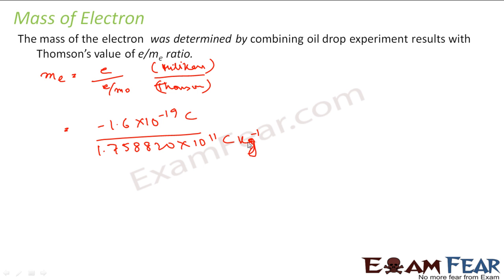Please note the units, coulomb per kg. So if you divide this right, you get mass as minus 9.1074 into 10 to the power minus 31 kg. Since it is a mass it can't be negative, so we will take the absolute value as positive. So the mass of electron came out to be 9.1094 into 10 to the power minus 31 kg.